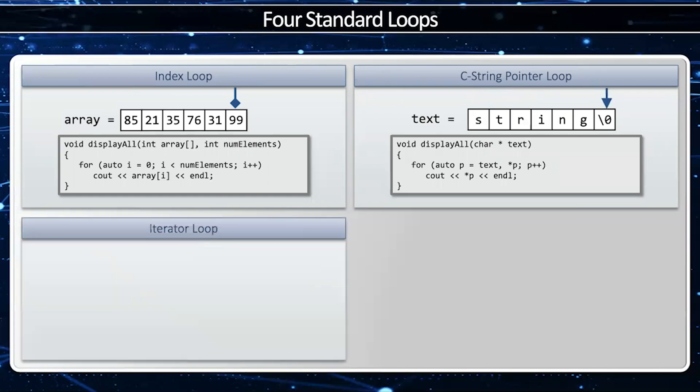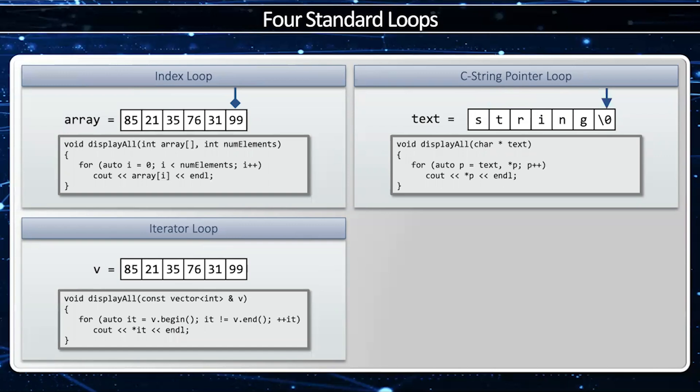The iterator loop is similar to the index loop, except I don't use an integer, but rather I use an iterator. Let's take a vector with six elements as an example. I'm going to start with it equals v.begin, and then keep going as long as it does not equal v.end, advancing it by one.